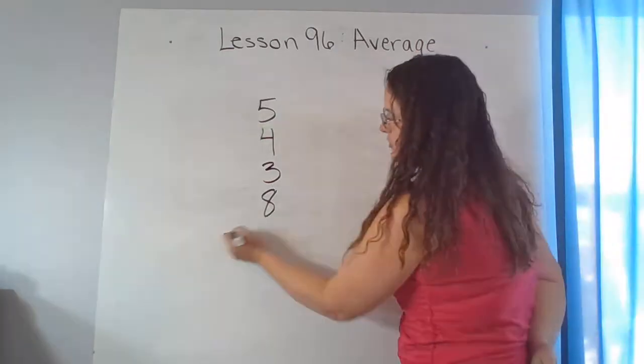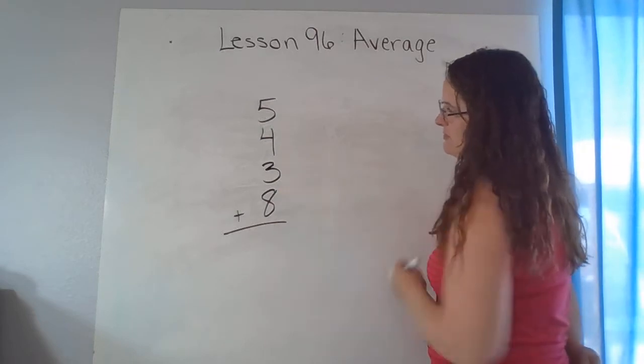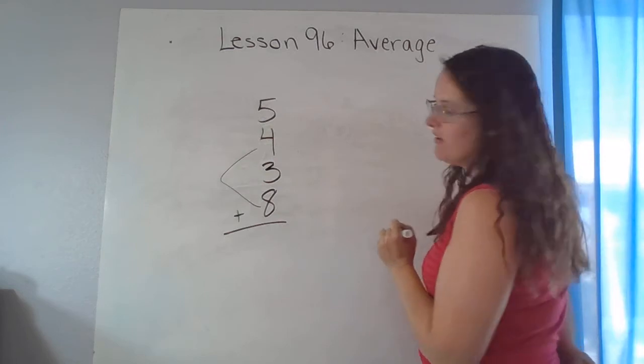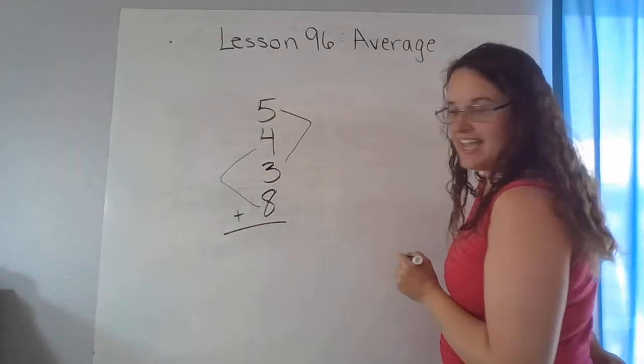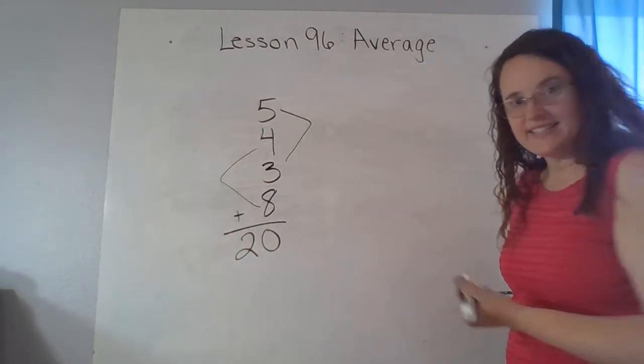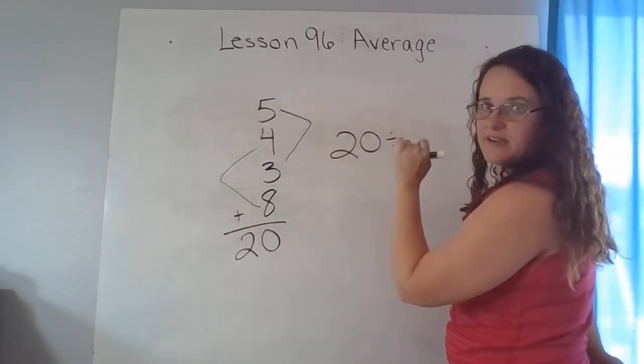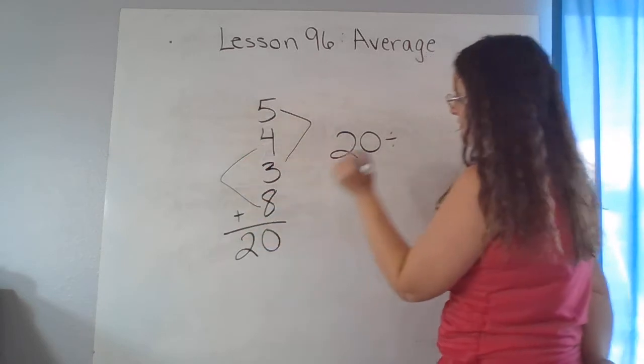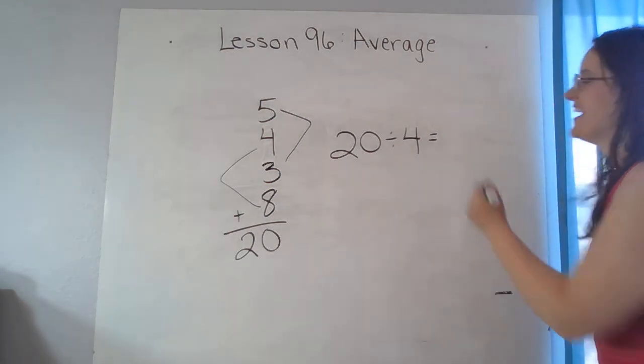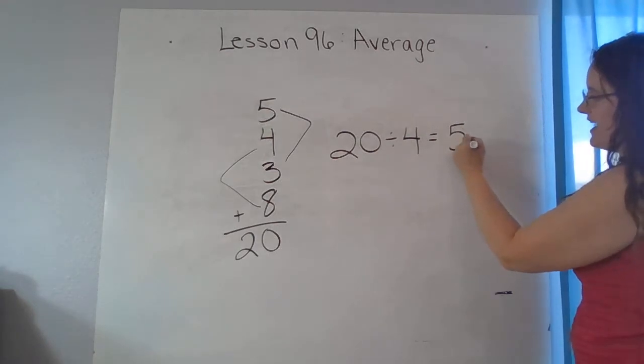So two steps. Remember our first step is we need to add. So we have to figure out five plus four plus three plus eight. Let's see. I know that makes twelve. I know that makes eight, and eight plus twelve is gonna give me twenty. My second step is to divide twenty by however many numbers I added here. So one, two, three, four.